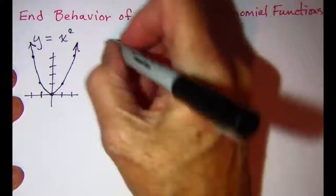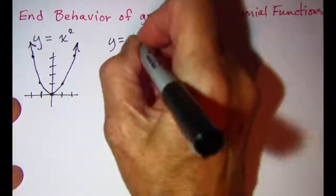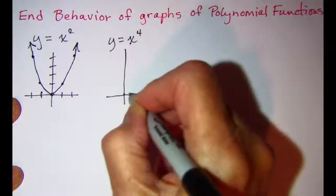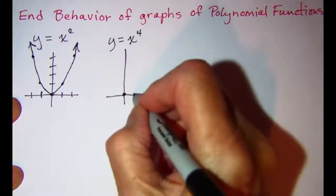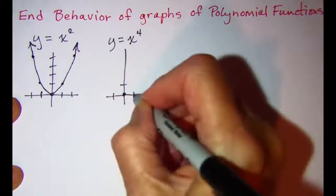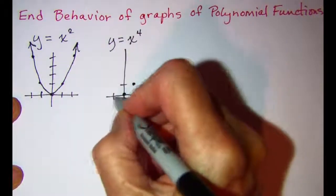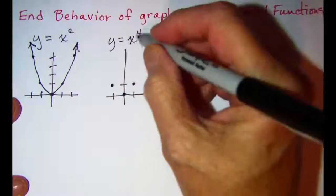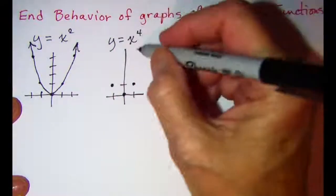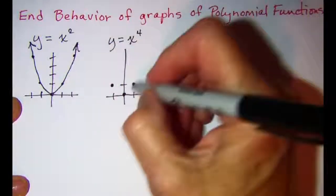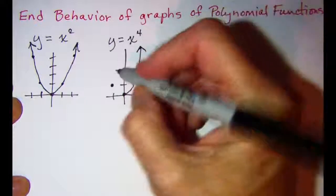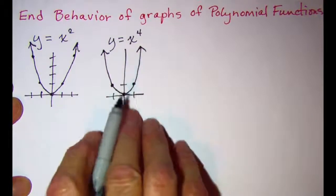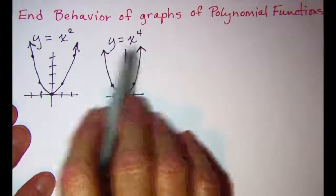Now if we were to graph y equals x to the fourth, right around the origin, 0 to the fourth power is still 0 and 1 to the fourth power is still 1. Negative 1 to the fourth power is still 1, but when x is 2 it's a little higher — but it's still a positive y value. So y equals x to the fourth power is still going to have this same basic shape at the ends: both arms up.